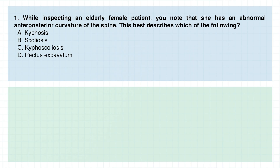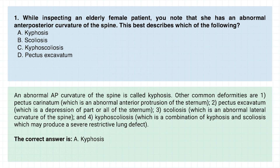Question number one. While inspecting an elderly female patient, you note that she has an abnormal anteroposterior curvature of the spine. This best describes which of the following? A. Kyphosis. B. Scoliosis. C. Kyphoscoliosis. D. Pectus excavatum. The correct answer is A. Kyphosis.